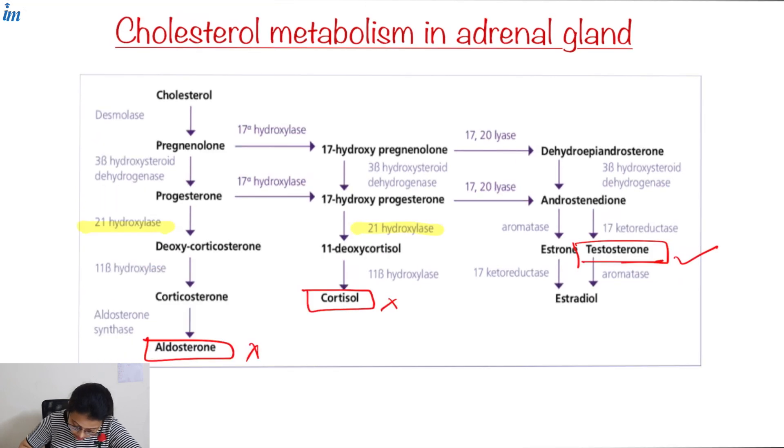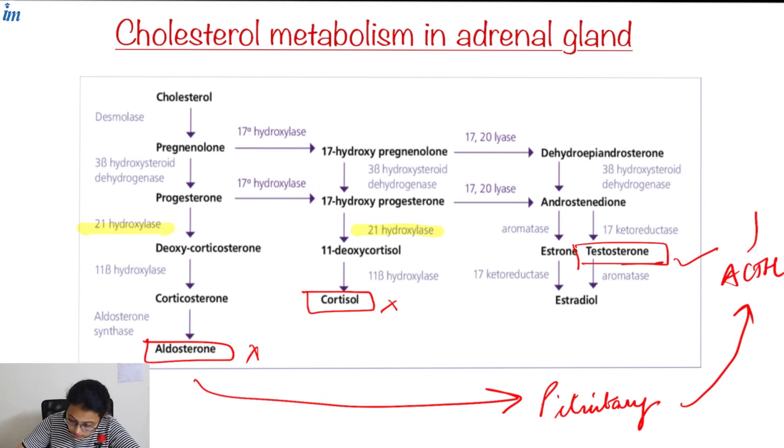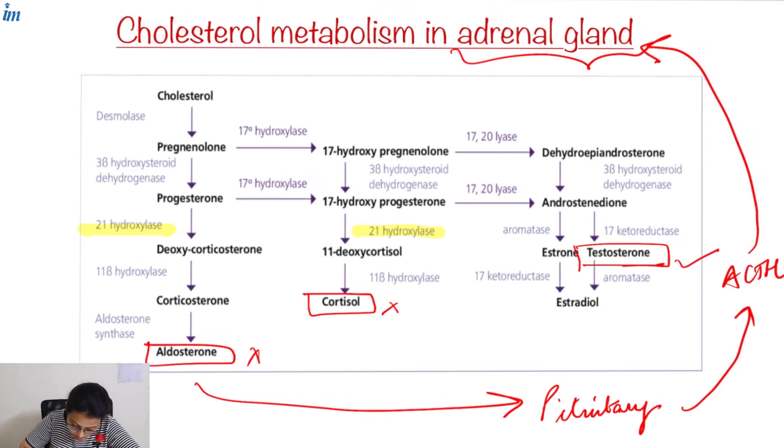As aldosterone is not produced, feedback is sent to the pituitary to release ACTH. This ACTH acts upon the adrenal gland. Despite continuous stimulation by ACTH, aldosterone is not produced because we need 21-hydroxylase for its production, and this enzyme is absent. So aldosterone and cortisol are not produced, but testosterone is continuously produced under the effect of ACTH.